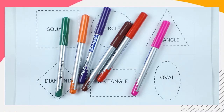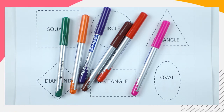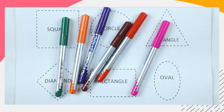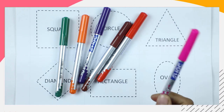Hello friends, today we learn shapes. Which shape is this? Square, circle, triangle, diamond, rectangle, oval — we learn shapes.